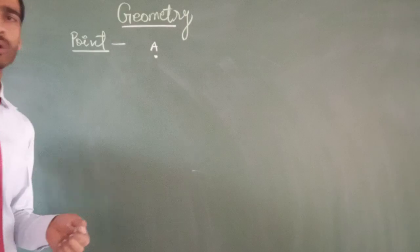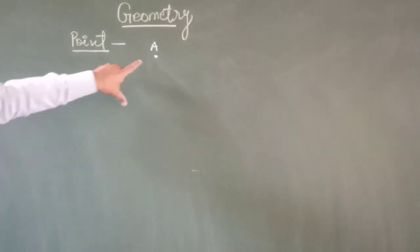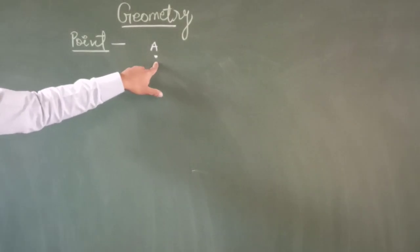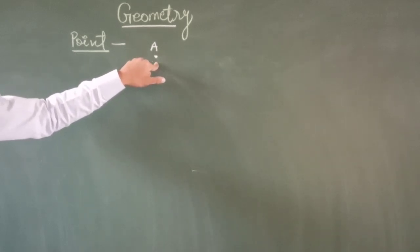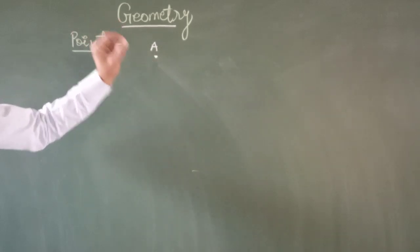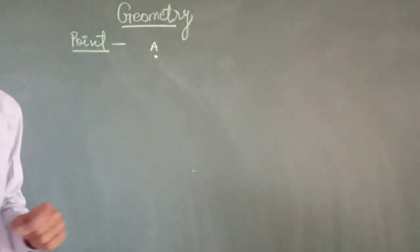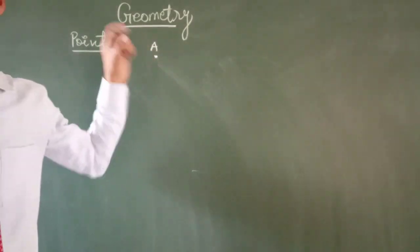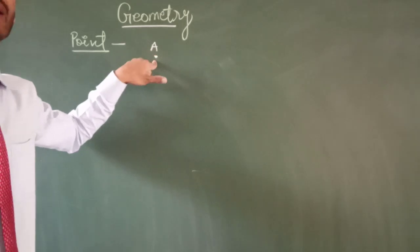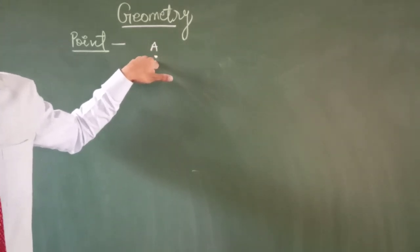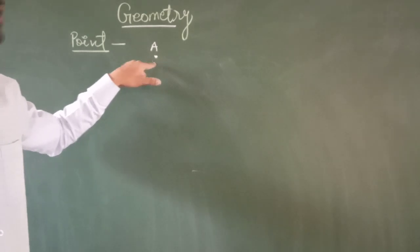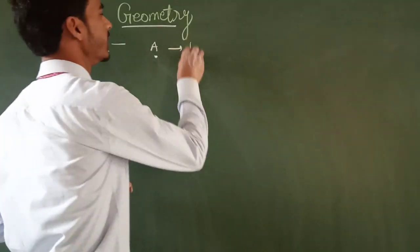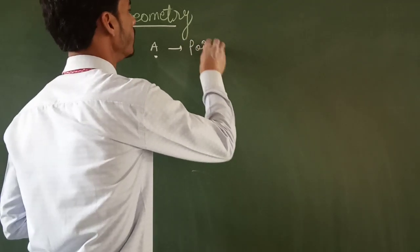A point is an exact location on a flat surface and it does not have length, width, or height — no breadth, no length, no width, no height. A point is named with a capital letter and its symbol is a dot. For example, a point named A is written as point A.